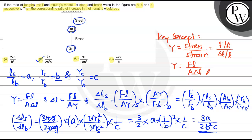So option b, 3a by 2b square c, is the right option. Hope you understood it well. All the best.